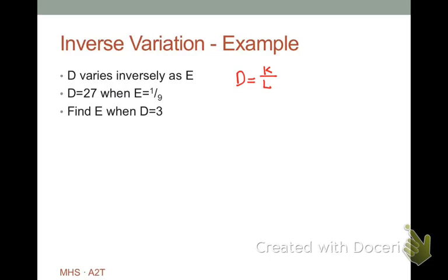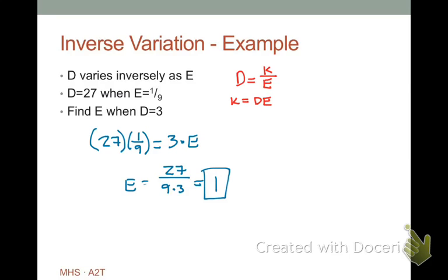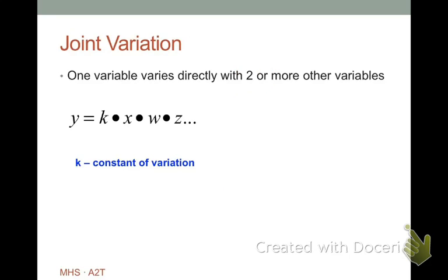So, if we have an example where we say d varies inversely as e, then we'd say d is equal to some constant divided by e. So, that's how d and e are inversely related, with k being our constant. Now, once again, we're going to solve for k. And then we're going to set up little proportions and set them equal to each other. So, we get k equals d times e. So, one d e is going to equal the other d e. So, we'll get 27 times 1 ninth. That's one d times e. And that's got to equal our other one, which we know d is 3 times the other e, which we don't know. And now we're just going to solve for e. 27 divided by 9 divided by 3 is equal to 1. Pretty straightforward.